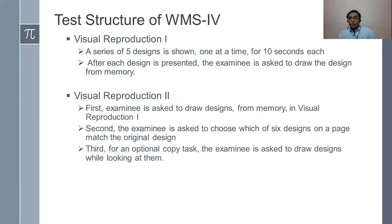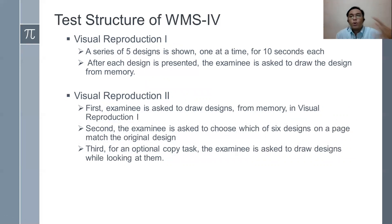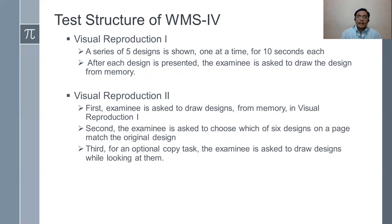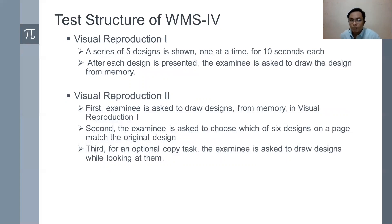Visual reproduction 1: a series of five designs is shown one at a time for 10 seconds each. After each design is presented, the examinee is asked to draw the design from memory. Visual reproduction 2: first, the examinee draws designs from memory as in visual reproduction 1. Second, the examinee chooses which of six designs on a page matches the original design. Third, in the optional copy task, the examinee draws the designs while looking at them.